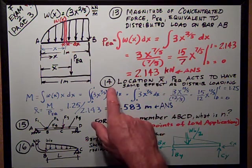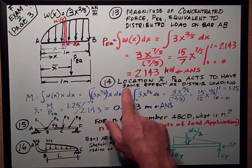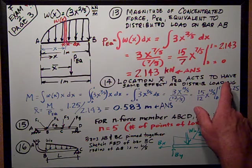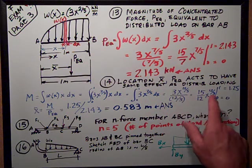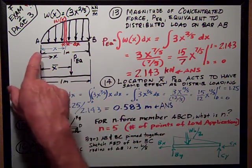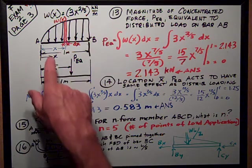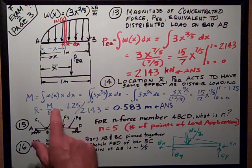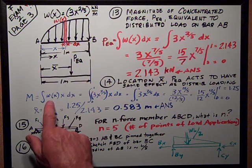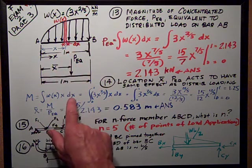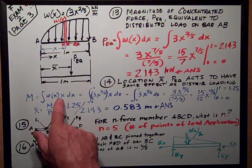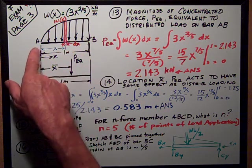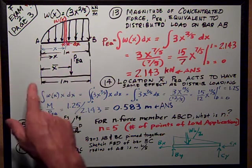Number 14 is find the location x-bar that PEQ acts to have the same effect as the distributed loading. So I just want to take the moment about point A of that distributed loading. So that's really w, the load is wx dx, and I've put the x term, which is the distance to the point A, the left end, of any one of those little elemental segments.